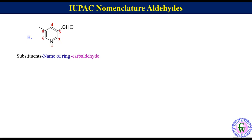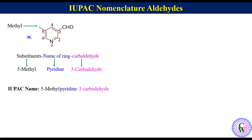There is a methyl at position 5, so the substituent will be 5-methyl. The ring is pyridine. The position of CHO is 3, so in the name we will have to write 3-carbaldehyde. Thus the IUPAC name of this molecule will be 5-methylpyridine-3-carbaldehyde.